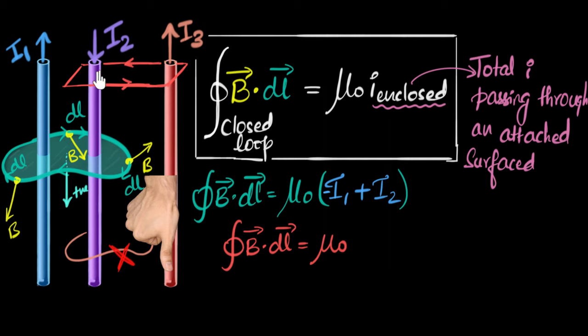All right, so the first step would be to dip this in a soap solution and attach a flat surface to it. And now the current that penetrates through this surface will be our enclosed surface.